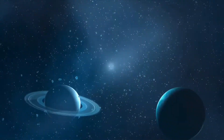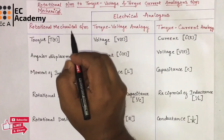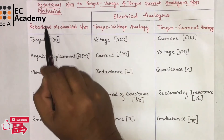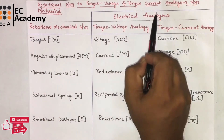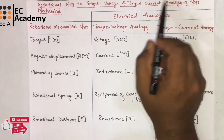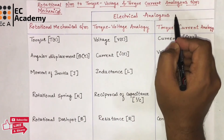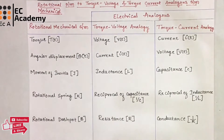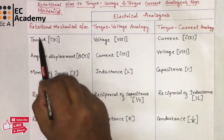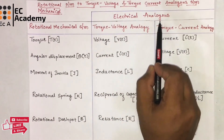Hello friends, welcome to ESEA Academy. In this lecture, let us understand rotational mechanical system to torque voltage and torque current analogous system. If the mathematical equations of two systems are same, then such type of systems are known as analogous systems. Now, let us see how to convert the rotational mechanical system into an electrical analogous system.